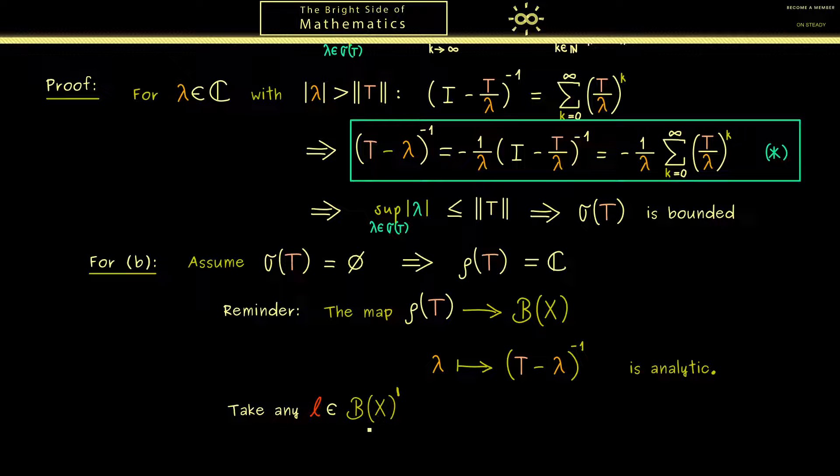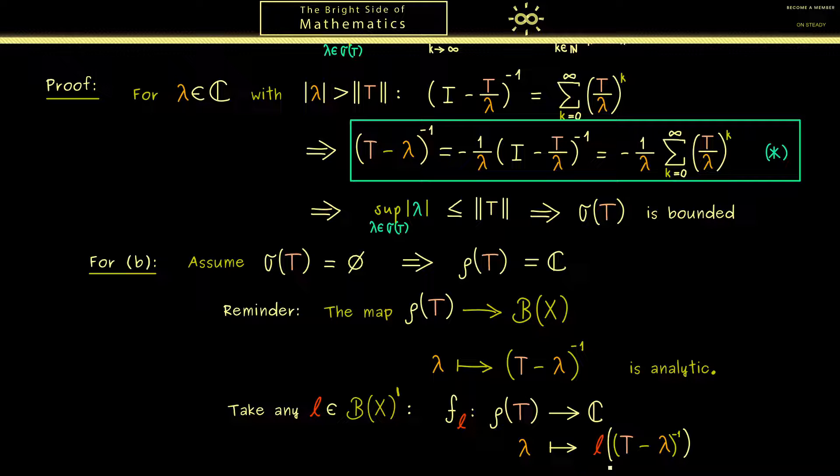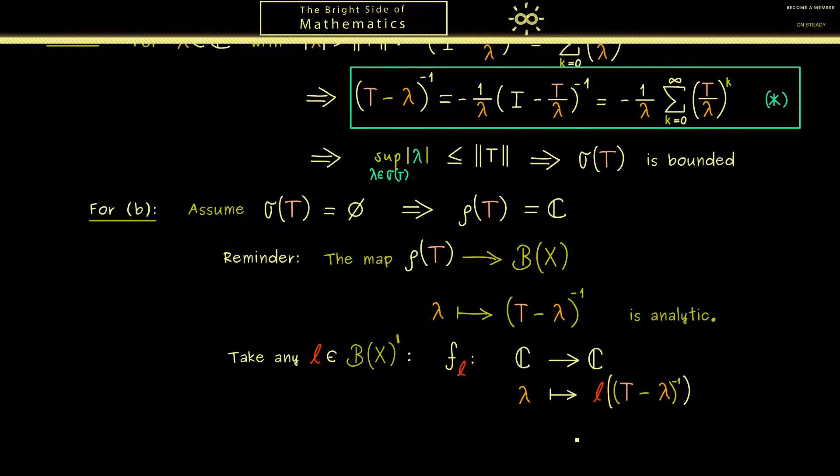Therefore this l is now a linear functional defined on the operators. And of course now I want to apply the l to this operator here. Now you see we get a nice map f_l from the resolvent set into C, because the linear function l maps into the complex numbers. Also by assumption we know the resolvent set is given by the whole complex plane. So what we have here is a very nice analytic function. An alternative name for this is the notion holomorphic. Therefore now at this point you can use everything you know from complex analysis.